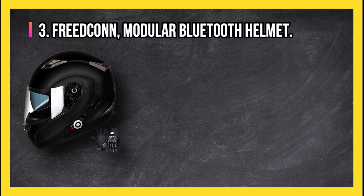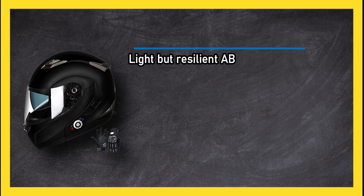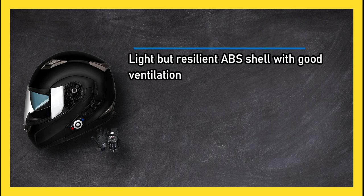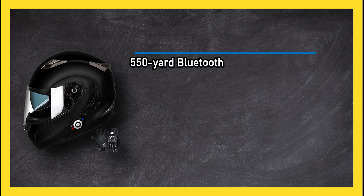At number three, Freedcon modular Bluetooth helmet. Light but resilient ABS shell with good ventilation and washable liner. Drop-down sun visor, 550 yard Bluetooth range with built-in FM receiver, plus usual intercom and smartphone functions including GPS voice prompt.